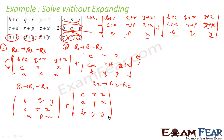Now if you see, I have got two determinants and the values look the same: b, q, y; c, r, z; a, p, x appear in both. But they are not in the same pattern. Why? Because I want a, p, x to be in the top row, b, q, y in the second row, and c, r, z in the third row. So I need to perform one operation to move rows into the correct position.